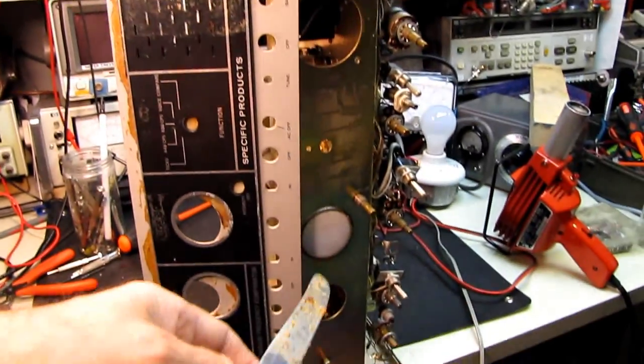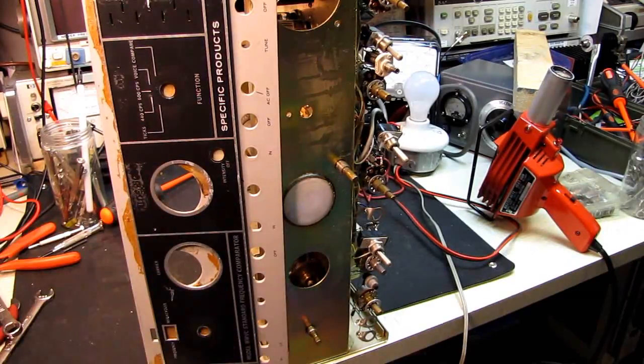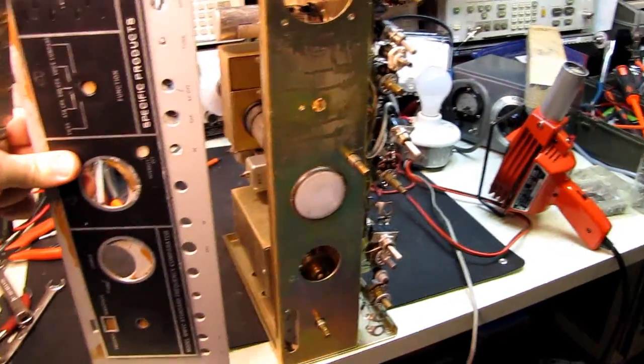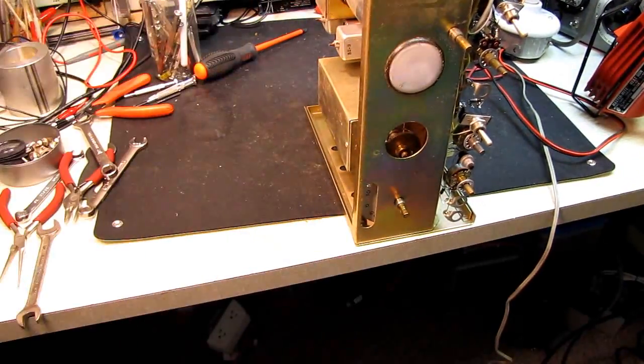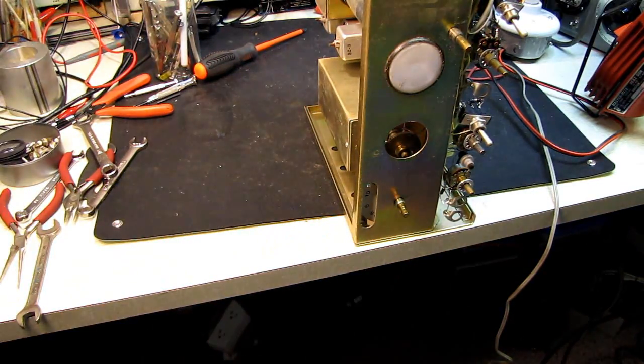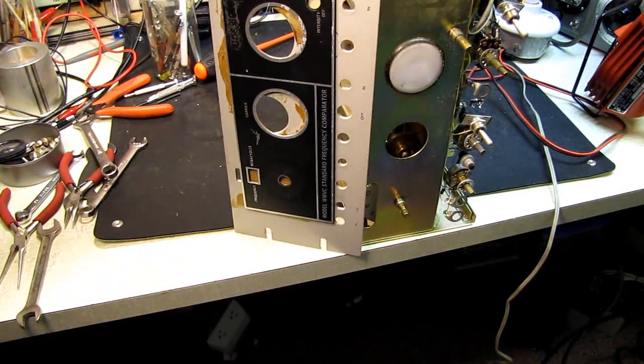You have to be careful around some areas. There's a plastic trim ring around the CRT you don't want to melt. And you certainly want to be careful down here in the dial area. You don't want to overheat the dial and burn the numbers off or warp that piece.